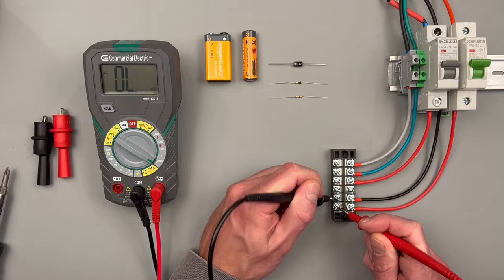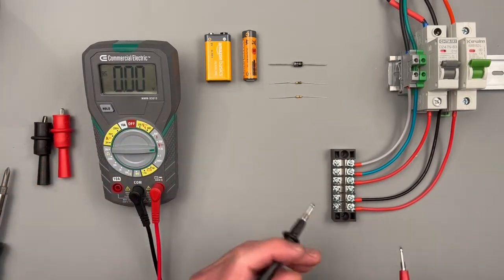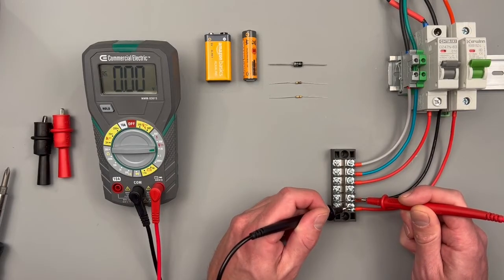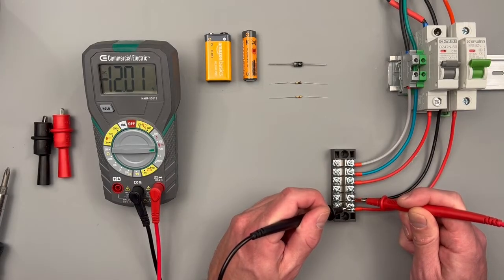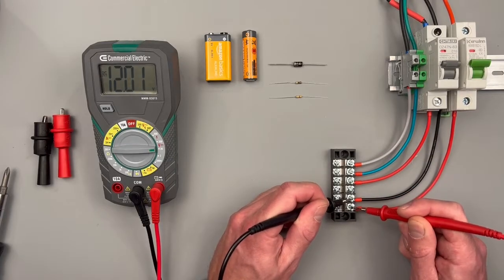I do really quickly want to show you what does happen if you do have your lead switched on a DC circuit. You'll see a negative sign come up on that far left side. That's trying to tell you that your polarity is mixed up somewhere, so pay attention to that.